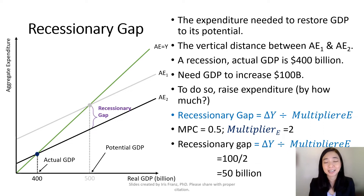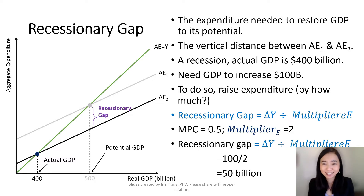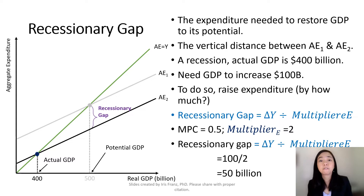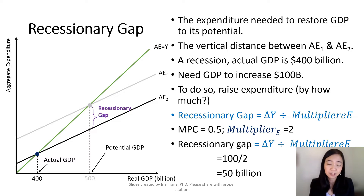Now we're ready to talk about recessionary gap. By definition, a recessionary gap is the amount of expenditure we need in order to restore our GDP back to its potential. For example, suppose we have a recession, and as a result, our aggregate expenditure goes down from AE1 to AE2. So now we have a new actual GDP of $400 billion, which is lower than our potential GDP of $500 billion.